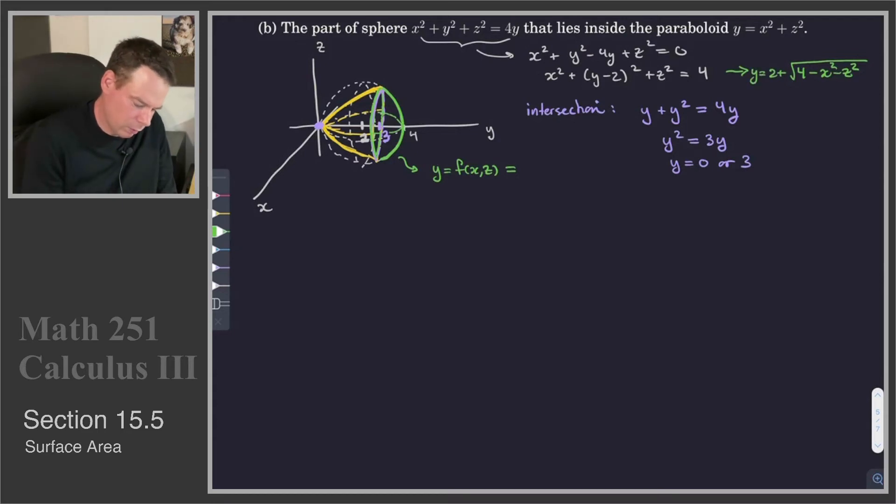So our function is 2 plus the square root of 4 minus x squared minus z squared. All right, I think we've got everything set up.